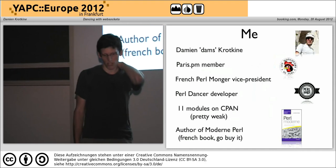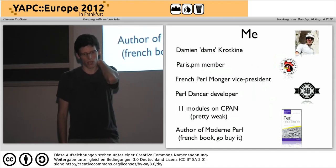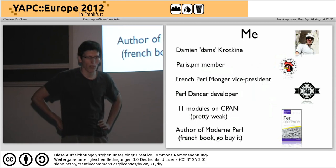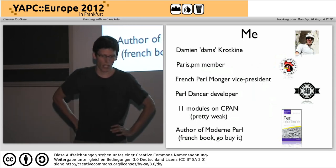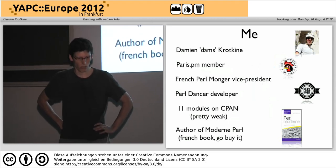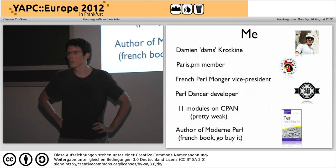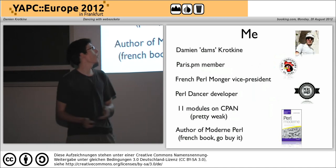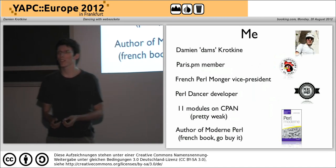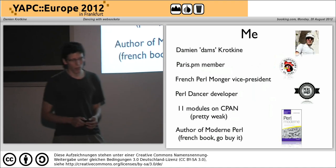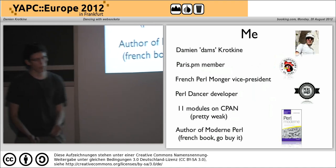We start with the me slide, as usual. I'm Damien Crotkin, my nickname is Dams. I'm from Paris, so I'm a member of Paris.PM. I do participate in the French monger stuff, and I actually did quite a few things, like organizing technical meetings, up to the point where I was elected vice president. And then I did nothing anymore. And I'm also a Perl Dancer developer. That's why I'm here, basically.